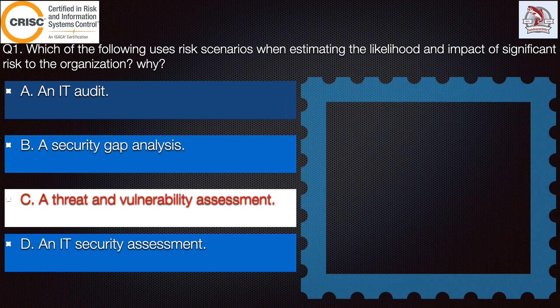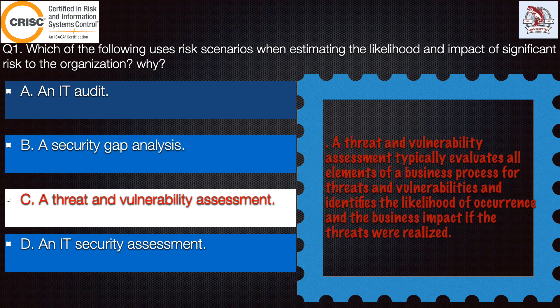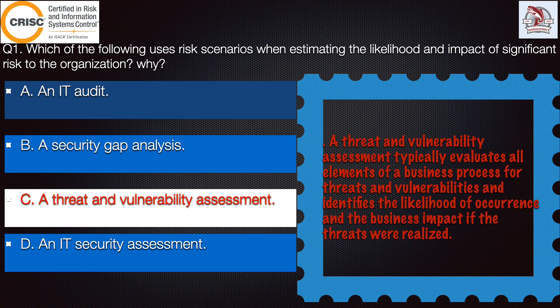Coming to option C, a threat and vulnerability assessment — this is correct because it typically evaluates all the elements of a business process for threats and vulnerabilities, and identifies the likelihood of occurrence and the business impact if the threat were realized.